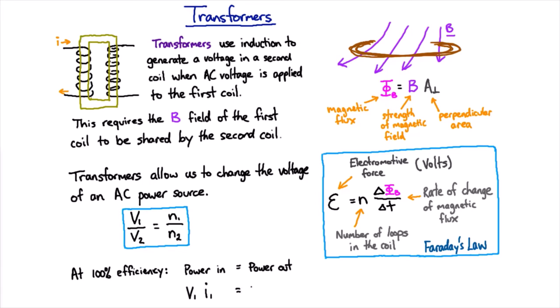And so the power in equaling the power out would be the voltage times the current for the first coil would be the voltage times the current for the second coil.